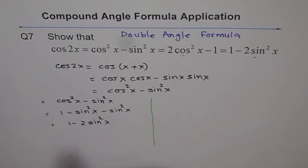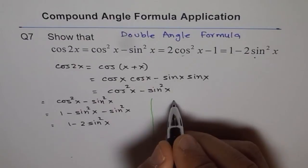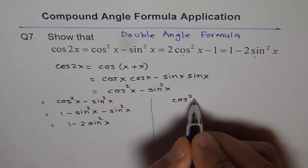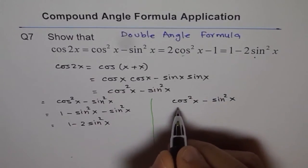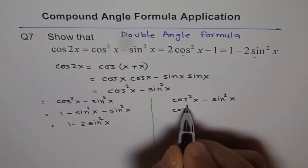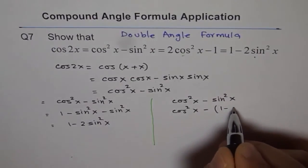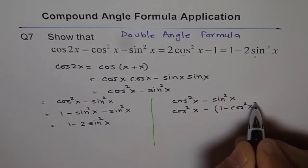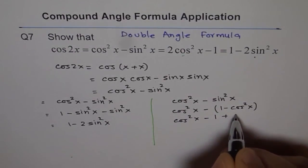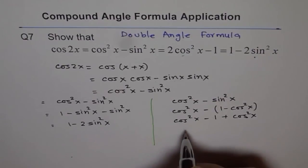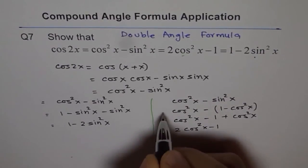And if I split sin, I will get in terms of cosine. This could be written as cos square x minus sin square x. This time I will maintain cos. And I will say cos square x minus, and sin square x is 1 minus cos square x. So that gives me cos square x minus 1 plus cos square x, which is 2 cos square x minus 1.